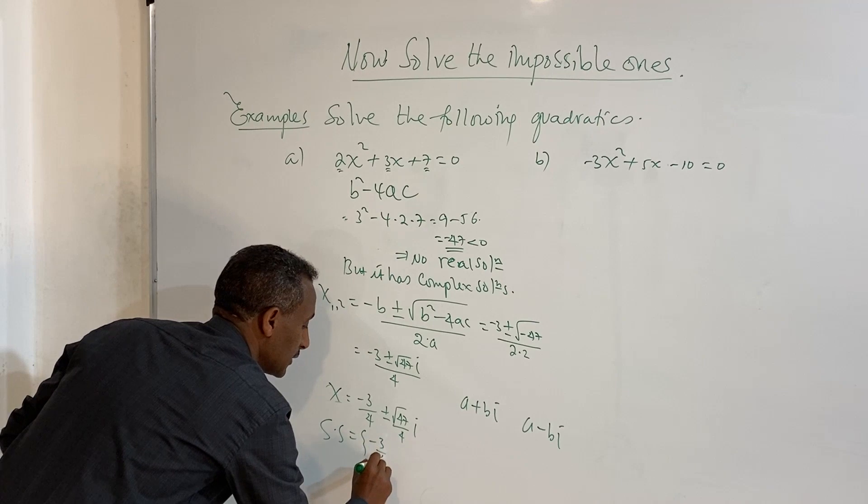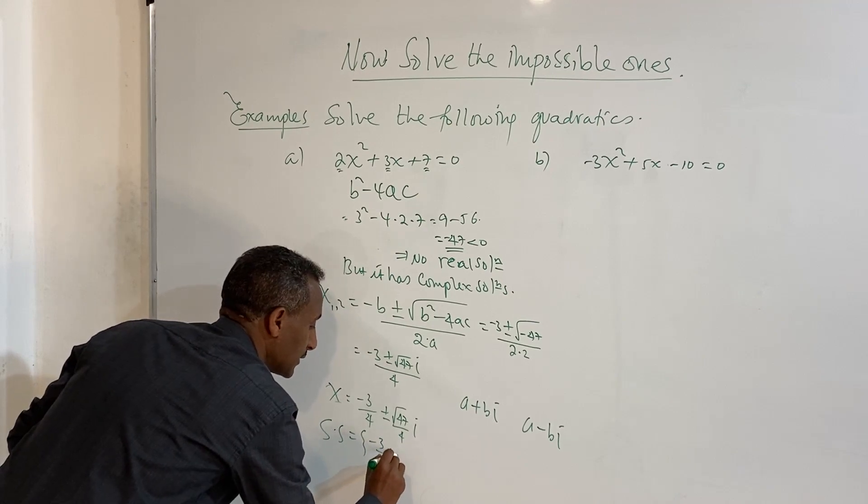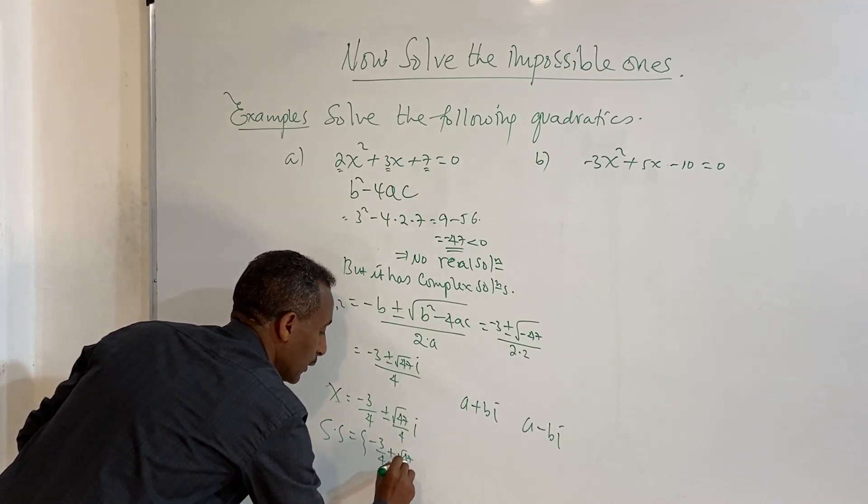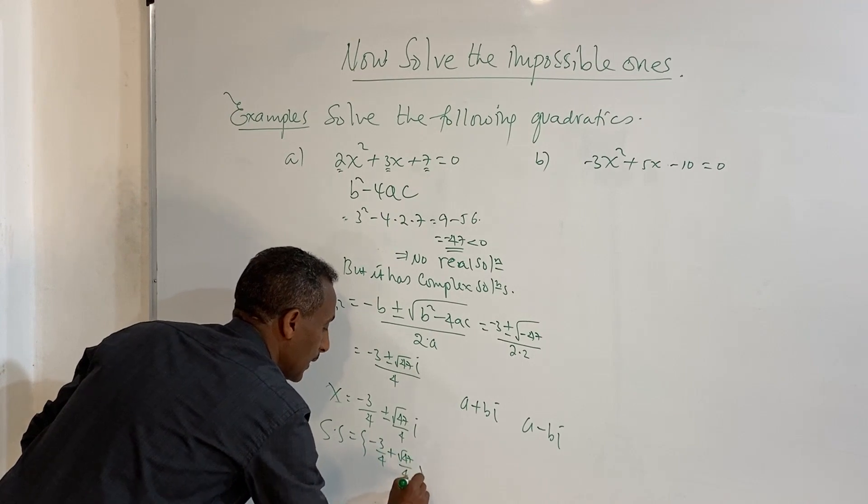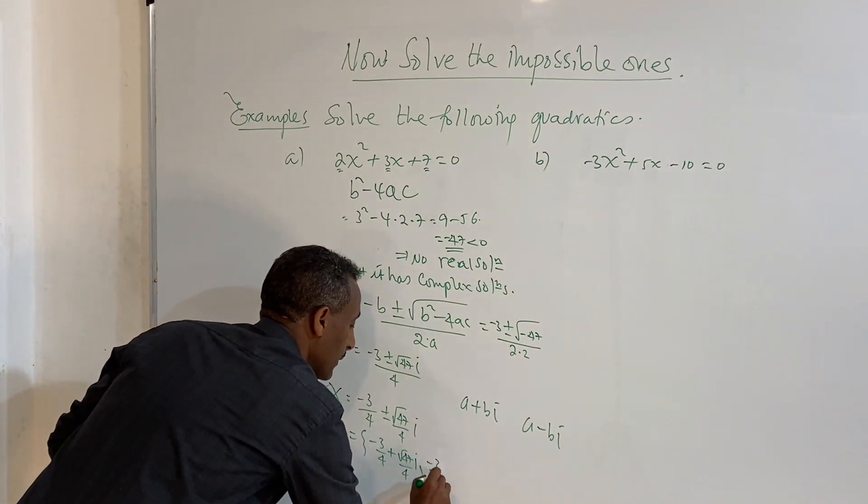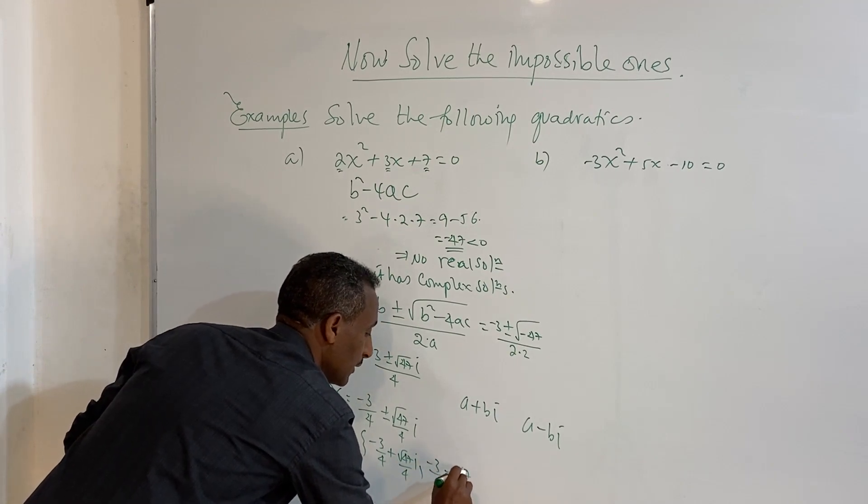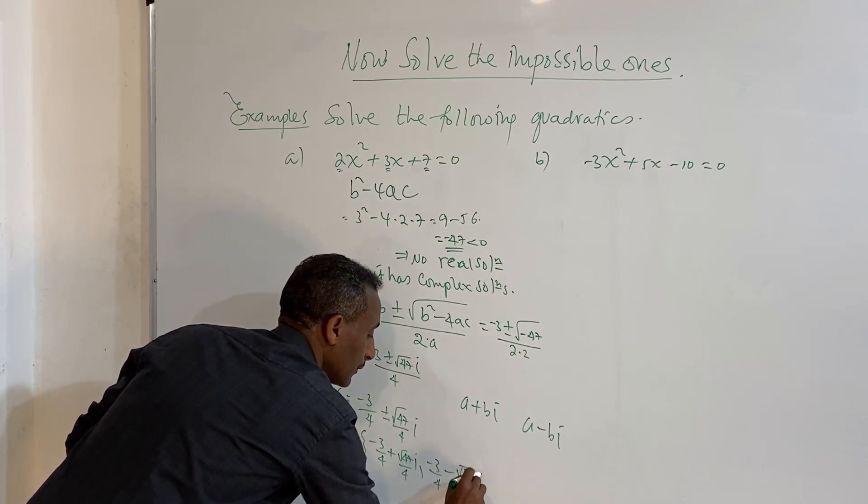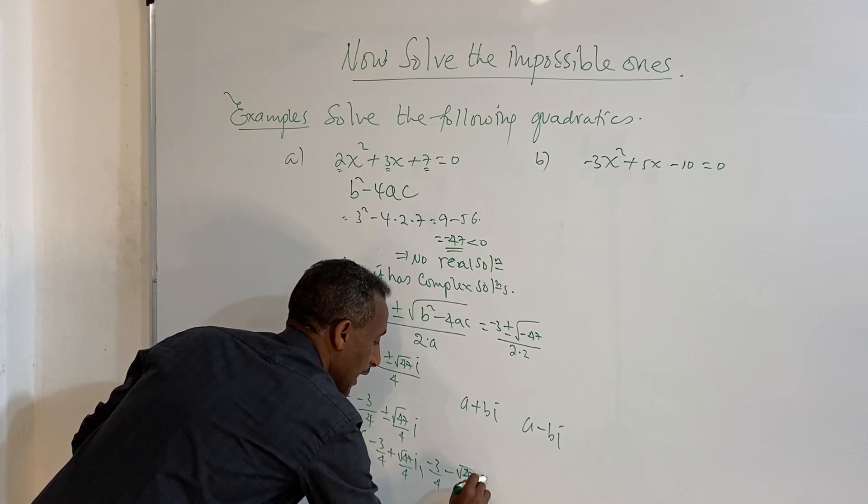So, we have x1 and x2. The solution here is the set containing minus 3 over 4 plus root 47 over 4 i, comma, minus 3 over 4 minus root 47 over 4 i.